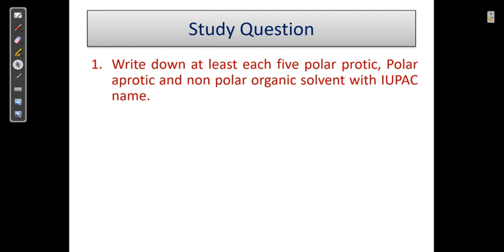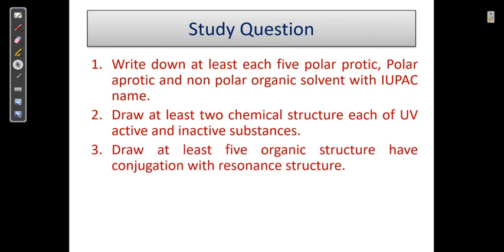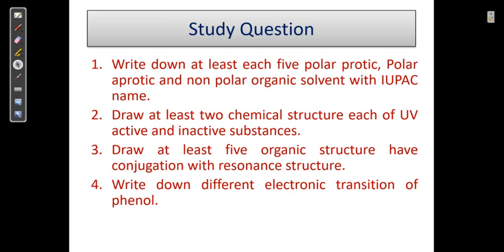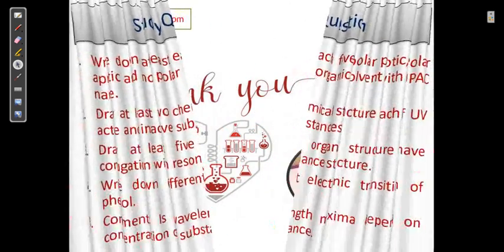Study questions: write down at least 5 polar protic, polar aprotic, and non-polar organic solvents with IUPAC names. Draw at least 2 chemical structures each of UV active and UV inactive substances. Draw at least 5 organic structures with conjugation and resonance structures. Write down different electronic transitions of phenol. And: does wavelength maxima depend on the concentration of the substance? This is my attempt to explain the basic experiment of solvent effect. If you like, share it with your friends and subscribe to this channel.